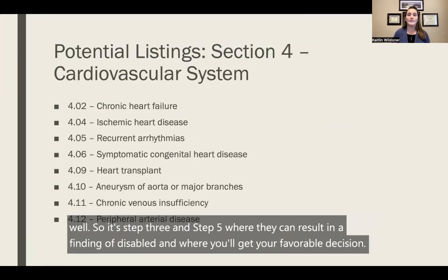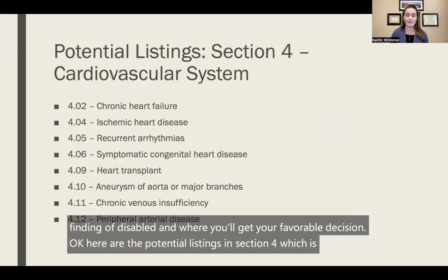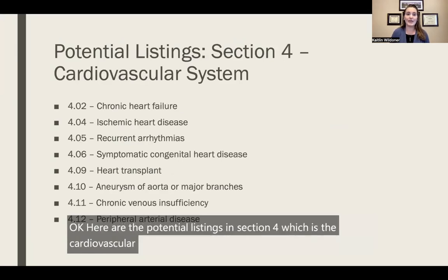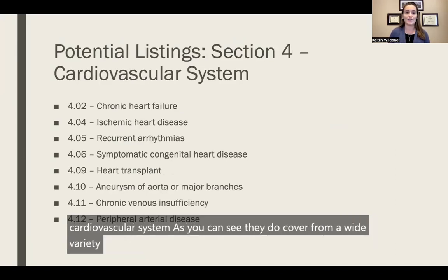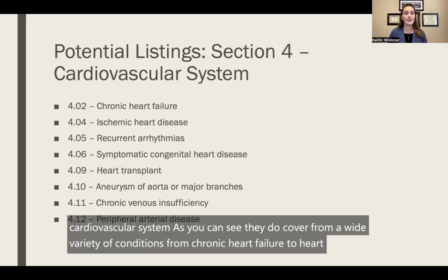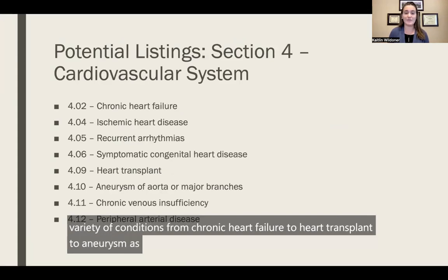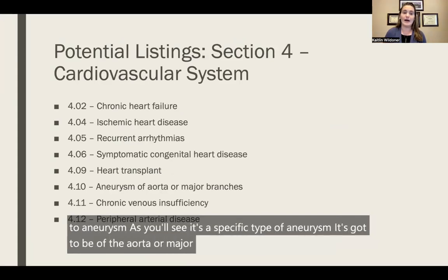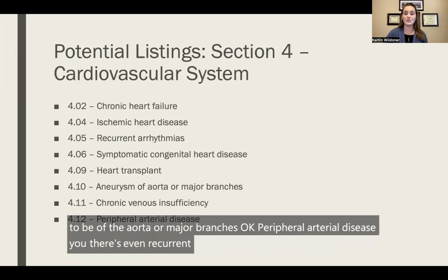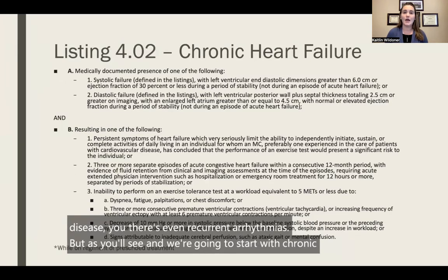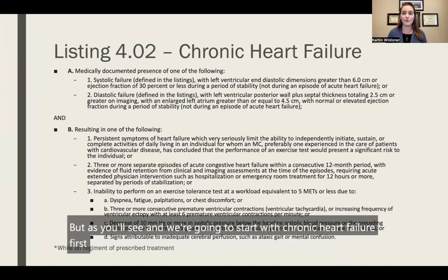Here are the potential listings in section four, which is the cardiovascular system. As you can see, they cover a wide variety of conditions — from chronic heart failure to heart transplant to aneurysm. It's a specific type of aneurysm — it's got to be of the aorta or major branches. There's also peripheral arterial disease and even recurrent arrhythmias. As we'll see starting with chronic heart failure, the records and requirements are very specific.